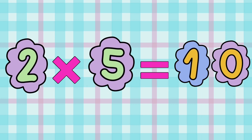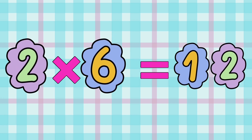2 x 5 is equal to 10. 2 5s are 10. 2 x 6 is equal to 12. 2 6s are 12.